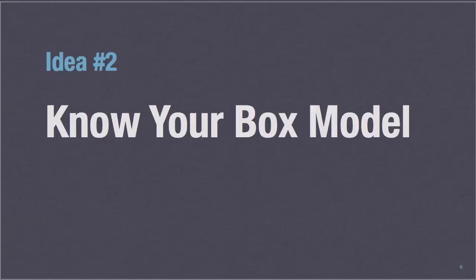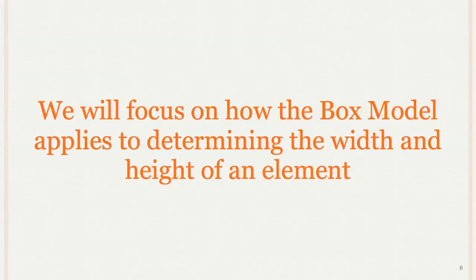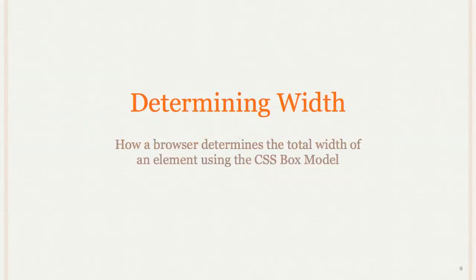So it's important then that you know the box model. And the box model is the model that CSS uses to determine how big these boxes are and how they get placed out. So that's how the web layout is based. It's based on the CSS box model. And the grid systems we're using are no different. So what we're going to focus on is how the box model applies to determining the width and the height of an element. And because when you're talking about layout, that's really the most important part of the box model.